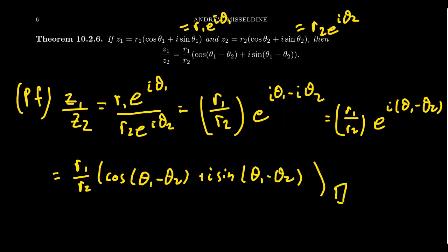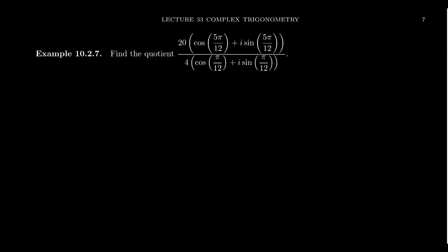We subtract the arguments because the arguments are exponents, and when you divide you subtract exponents — that's just exponent laws. We divide the moduli but subtract the arguments because the arguments are exponents and division means subtracting exponents. This makes the formula very intuitive.